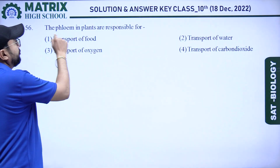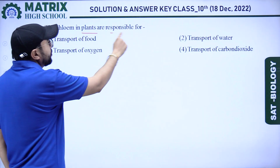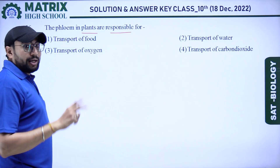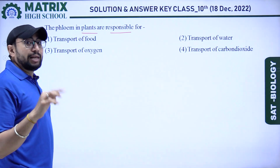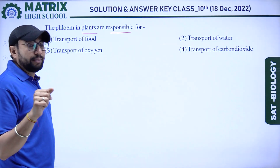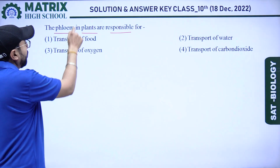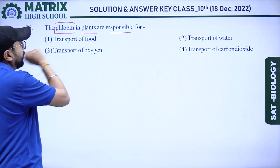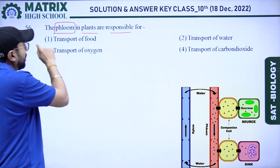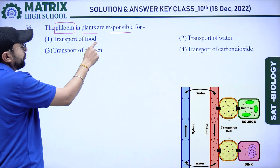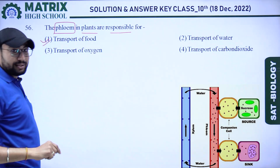Next question: the phloem in plants is responsible for? There are two types of tissue that help in transport: xylem and phloem. Phloem in plants is responsible for the transport of food. The first option is the right answer.